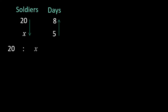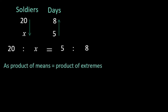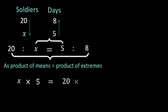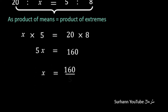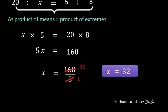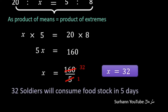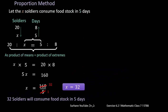Arrow direction goes from 20 to x. Product of means equals product of extremes: x × 5 = 20 × 8. Solving this gives x = 32, so 32 soldiers will consume the same food stock in 5 days.